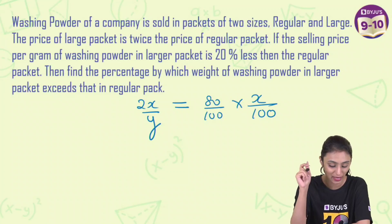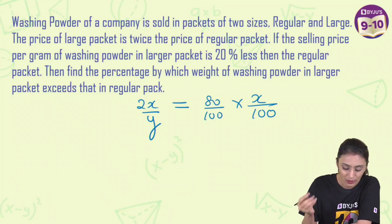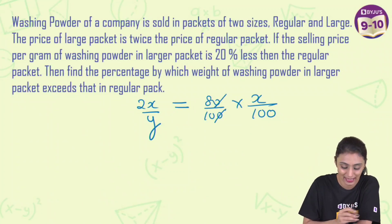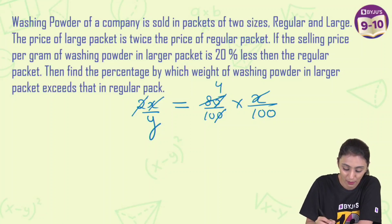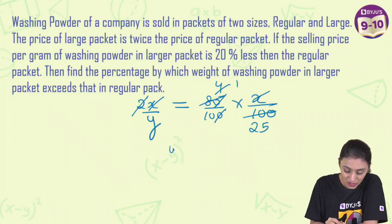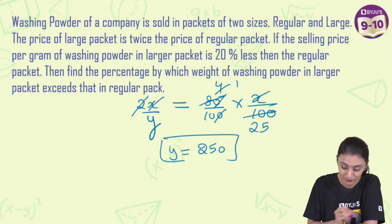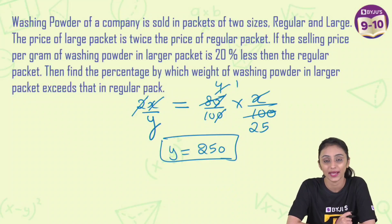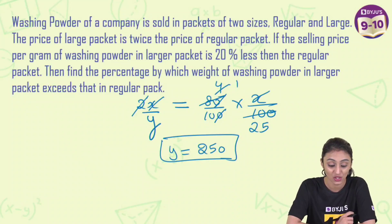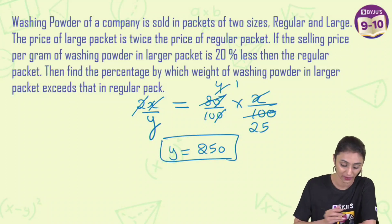Let's simplify: the zeros cancel out, x cancels out, and we get 2 times 1 over 4 times 25, so y equals 250.